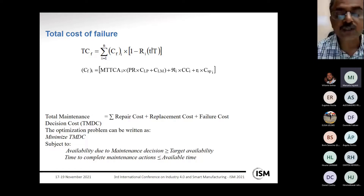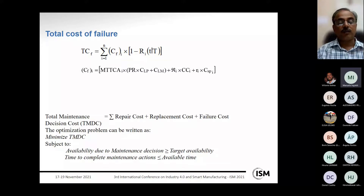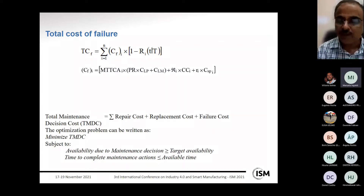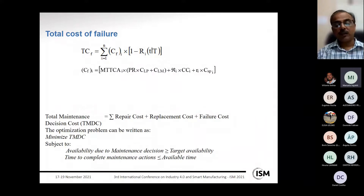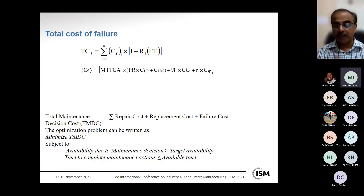The total maintenance cost includes repair cost, replacement cost, and failure cost. For optimization, the problem is formulated as minimizing the total maintenance decision cost, subject to two constraints: first, the availability based on the maintenance decision must be greater than or equal to the target availability requirement; second, the time to complete all maintenance actions must be less than or equal to the available maintenance time.